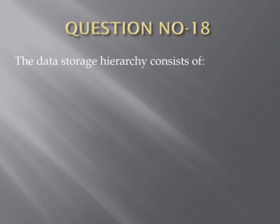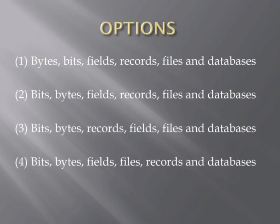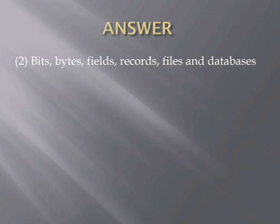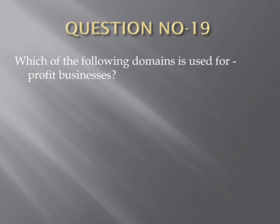Question number eighteen. The data storage hierarchy consists of — Options: (1) Bits, Bytes, Fields, Records, Files and Databases; (2) Bits, Bytes, Fields, Records, Files and Databases; (3) Bytes, Bytes, Fields, Records, Files and Databases; (4) Bits, Bytes and Database. The correct answer is the second one — Bits, Bytes, Fields, Records, Files and Databases.